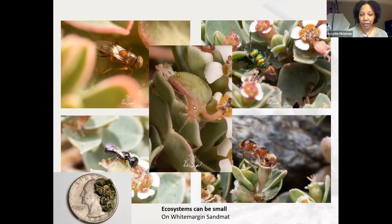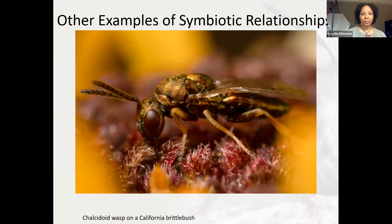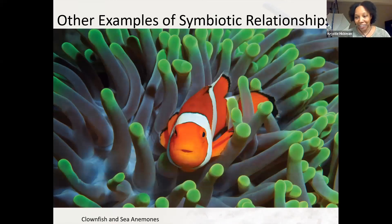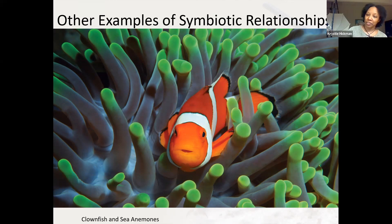This creature in the middle is a mite called Paratarsotomus macropalpus — about 0.5 to 0.7 millimeters — and it's the fastest land animal on Earth relative to its size. If it were the size of a human it would run about 1,300 miles per hour, compared to a cheetah which would run about 60 miles per hour. There are other examples of symbiotic relationships beyond the bee world — also in the wasp world. This is another wasp identified by the plant it's on: California brittlebush. It's not just the insect world either — many people are familiar with the sea anemone and the clownfish from Finding Nemo. The clownfish gets protection from the sea anemone, and the sea anemone gets food because the clownfish attracts prey to it.